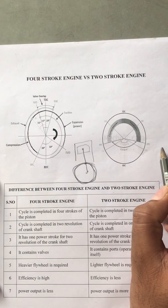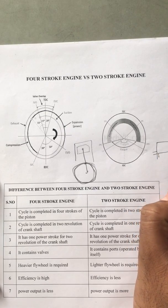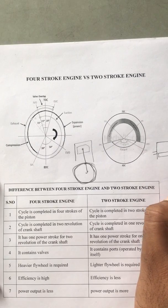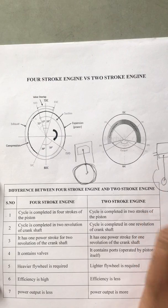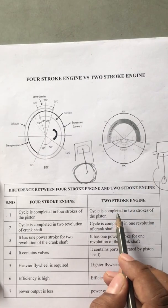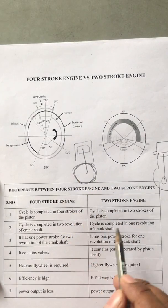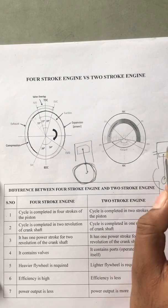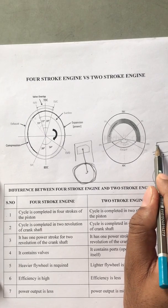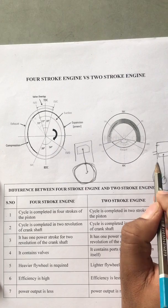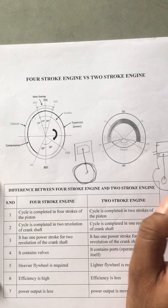Here in the 2-stroke engine, there is suction, compression, and this is the exhaust port. This is a transfer port. The cycle is also completed in four processes, but the processes are accompanied and the cycle is completed in 2 strokes of the piston. One stroke means the piston movement from top dead center to bottom dead center or bottom to top. The distance between TDC and BDC is called stroke.